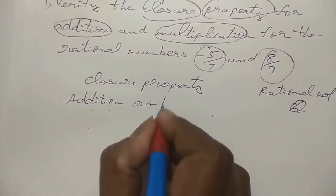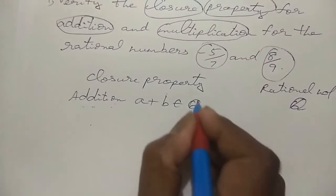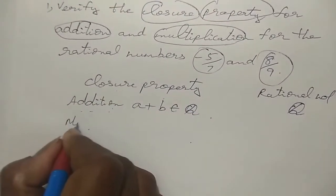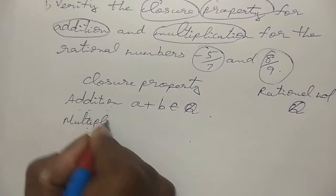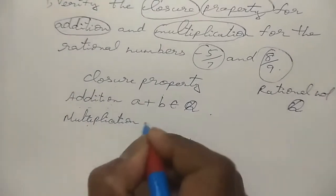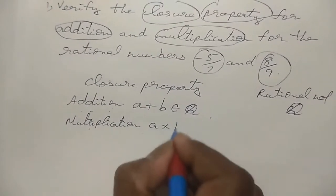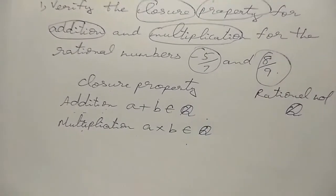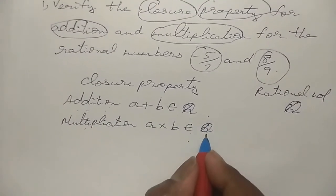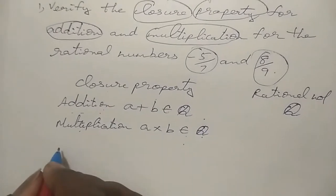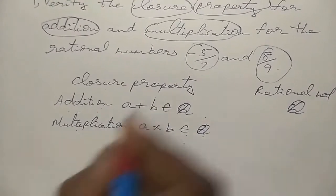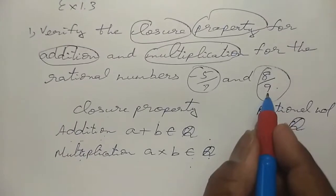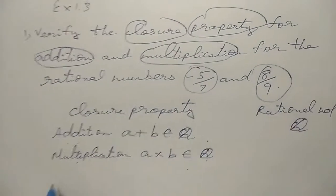We have to check whether a plus b also belongs to capital Q. For multiplication, a into b should also be a rational number — that is, belongs to Q. So first we check. What is a? It is minus 5 by 7. And b value, we take as 8 by 9.